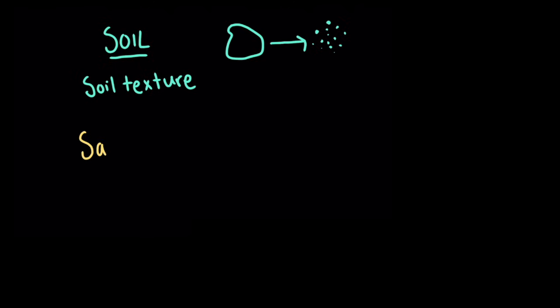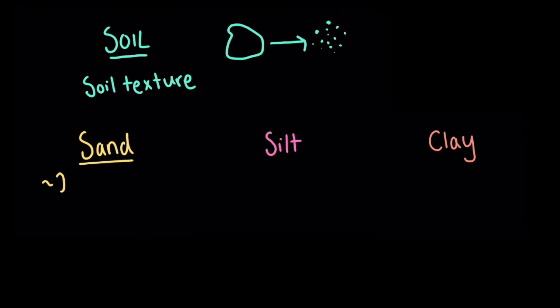We have sand, we have silt, and we have clay. Sand is made up of the larger and heavier particles of soil. Sand is around 2 millimeters to 0.05 millimeters, which is a 20th of a millimeter in diameter, and it feels very gritty to touch.